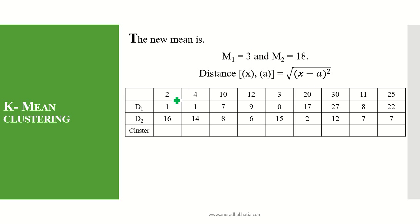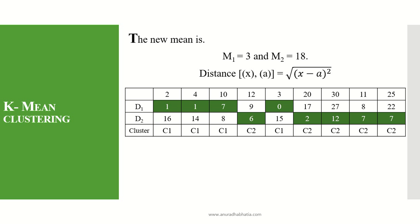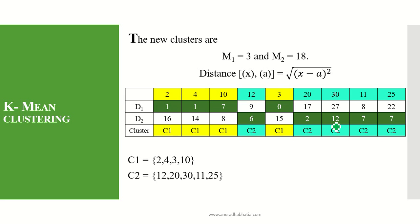Using the new mean values, for example, 2 minus 3 gives 1. We calculate D1 with M1=3 and D2 with M2=18. Once the distance matrix is complete, we determine which cluster each item belongs to. You will see that item set 10, which was belonging to cluster C2, has now moved to cluster C1. As there is a movement of an item set between the clusters, this cannot be my final cluster.